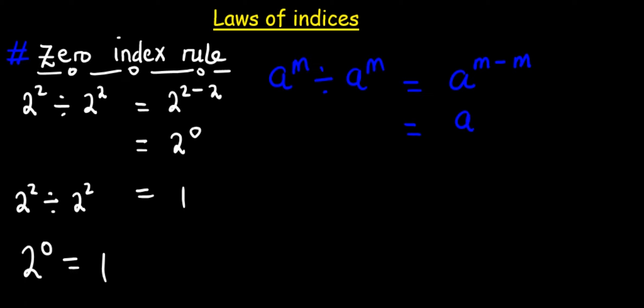So this is a raised to power m divided by a raised to power m, the result is equal to 1. What does that mean? A raised to power 0 is always equal to 1.